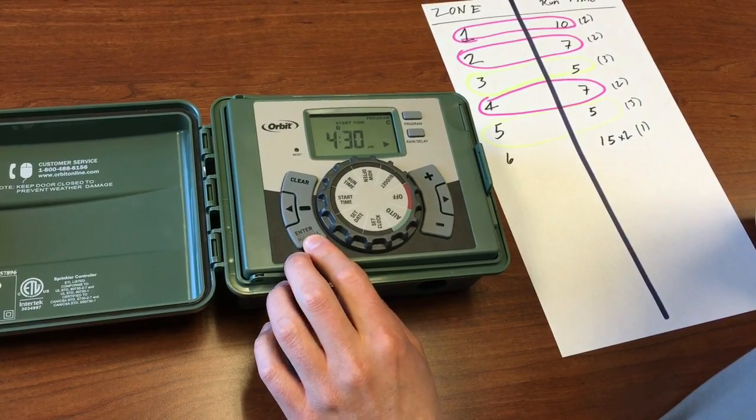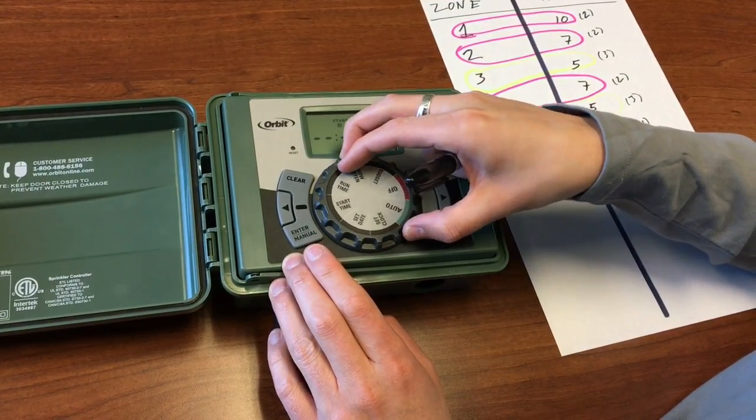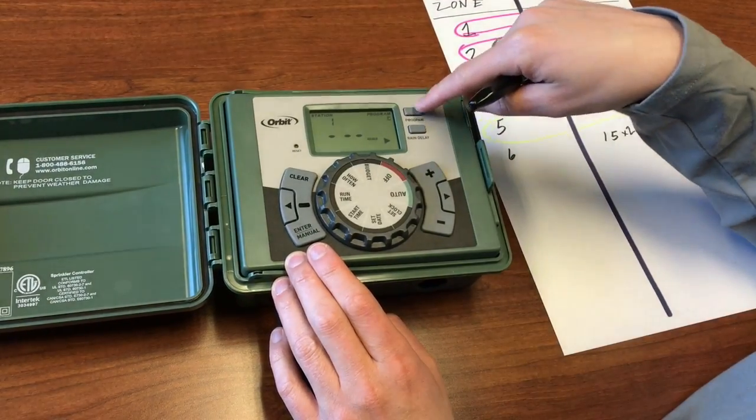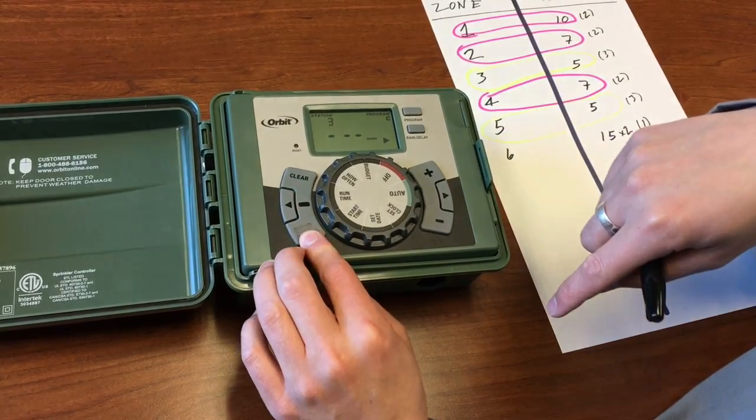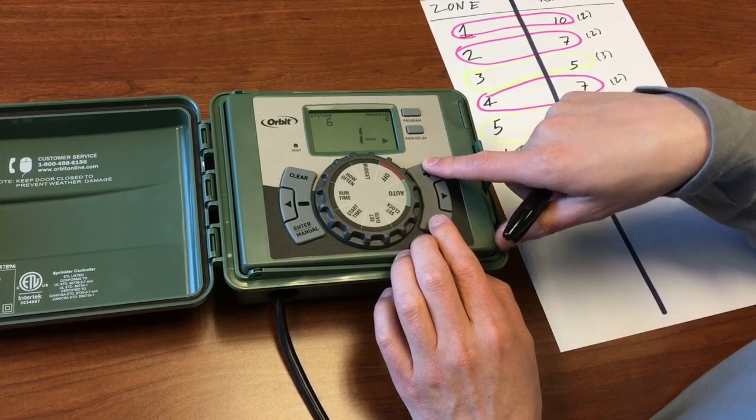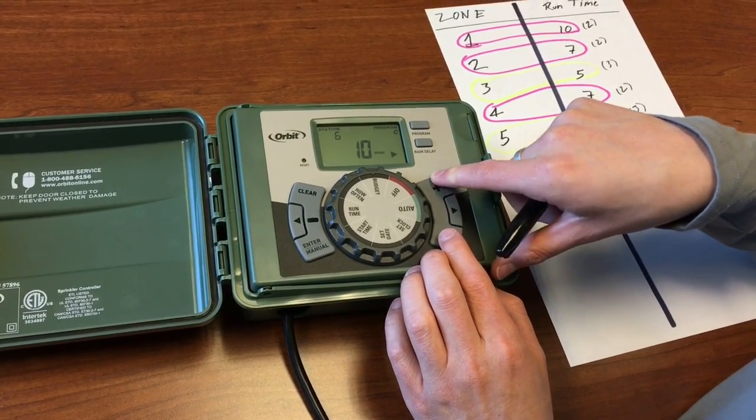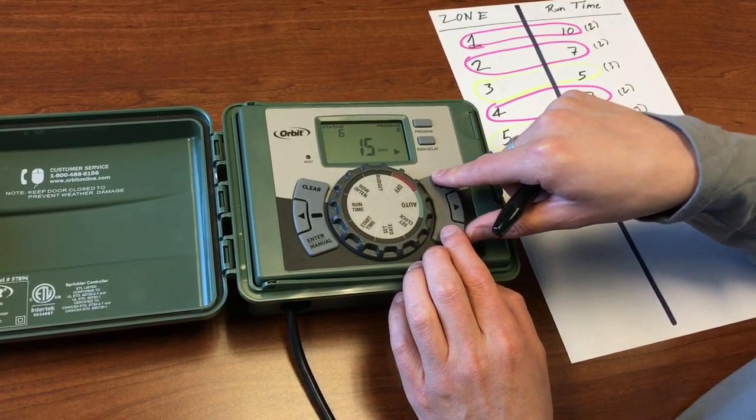Let's have this start at 4:30. That's when the first time is going to start. So the run time program C, we're going to station 6 remember. We'll skip all of those, go to station 6. It needs to run for 15 minutes twice a day.